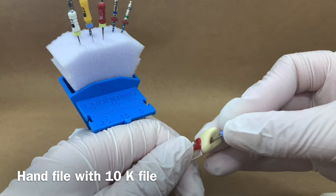Starting with a size 10K file, slowly explore the canal using the quarter turn in and pull motion until it reaches the working length.